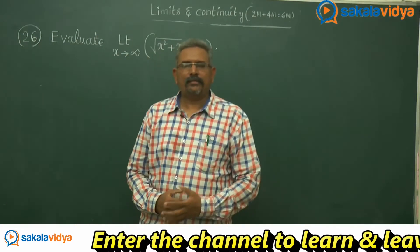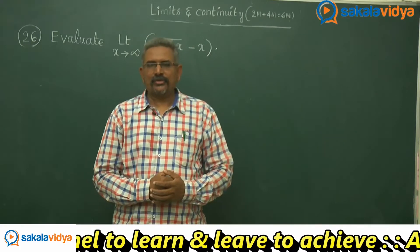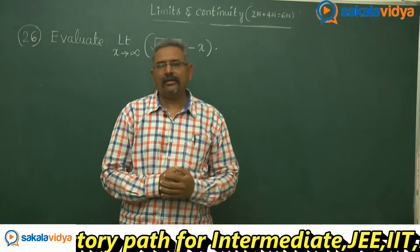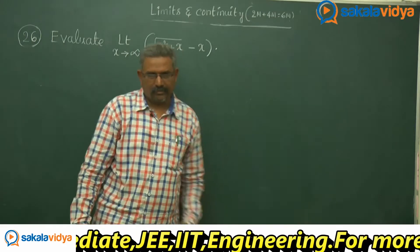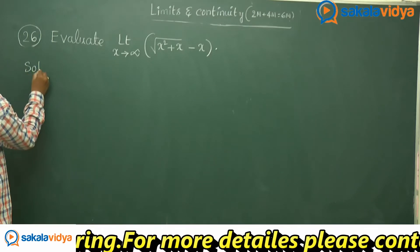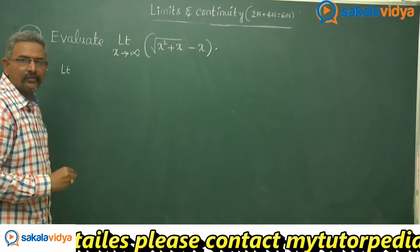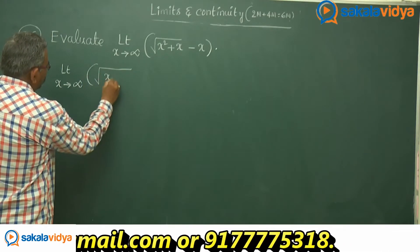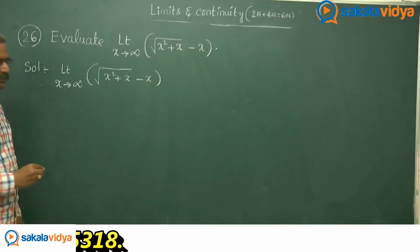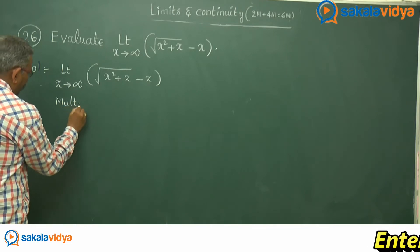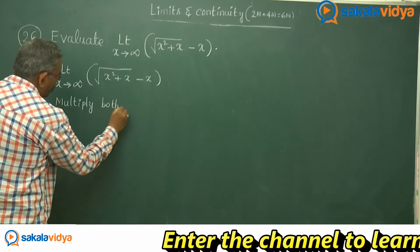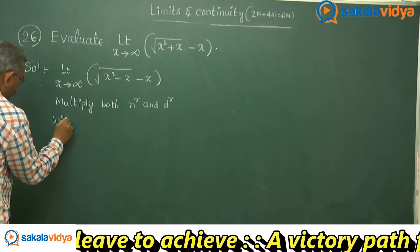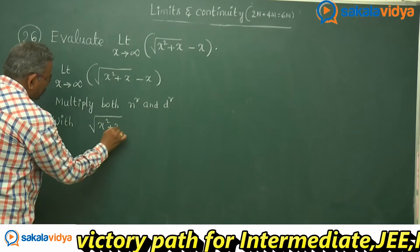Let us solve one more problem, because this problem is very important and is frequently asked academically as well as in competitive entrance examinations. Let us solve this problem by rationalizing the numerator. Limit x tends to infinity: root of x squared plus x, minus x. Multiply both numerator and denominator by root of x squared plus x plus x.